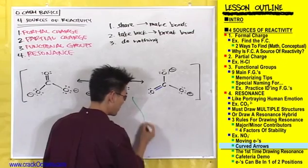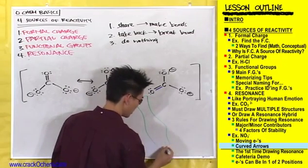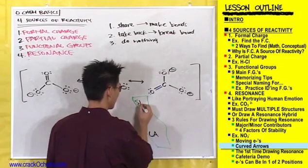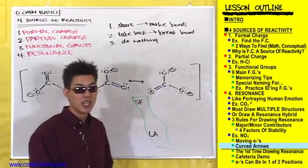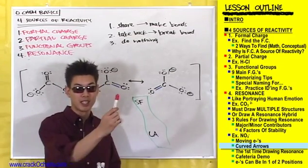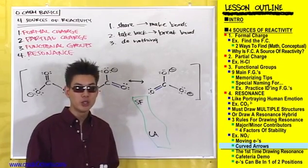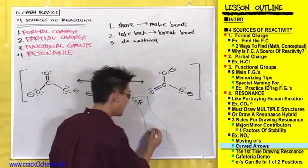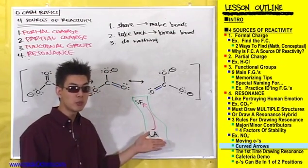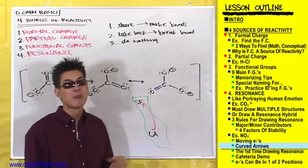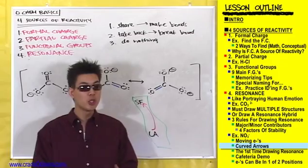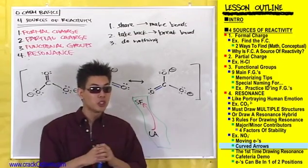Let me construct a really bad map of California. That's supposed to be California — here's LA and here's San Francisco. What you can do is draw an arrow from LA to San Francisco, and bam, you showed them where you started out and where you moved to. This is the same thing in chemistry, except the curved arrow is showing where electrons started out and where they moved to.